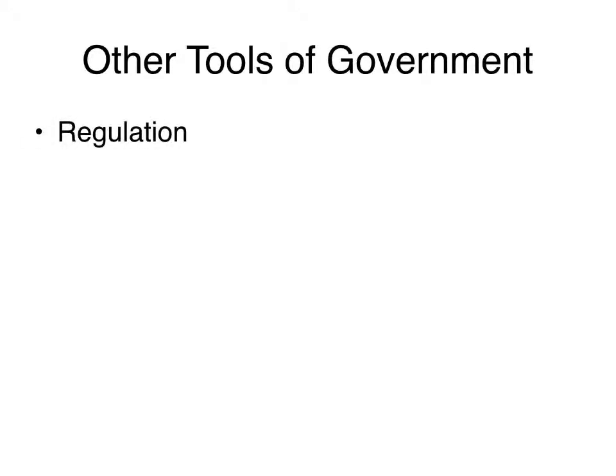Government has other tools. One is regulation — strictly to regulate human activity so as to not have harmful environmental consequences. One example of that would be for overpopulation, such as China's one-child policy that China experimented with in the 1970s.